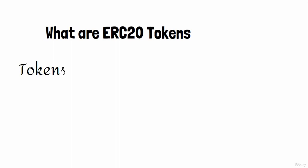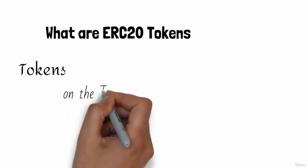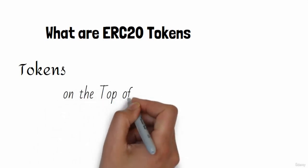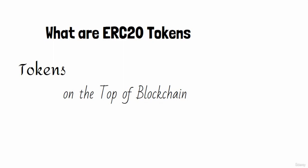However, there is a difference between cryptocurrencies and tokens. The main difference is that if you want to create a cryptocurrency, you need to create your own independent blockchain. However, when it comes to tokens, you can create tokens on another existing blockchain, so tokens can be created and exist on blockchains like the Ethereum blockchain.